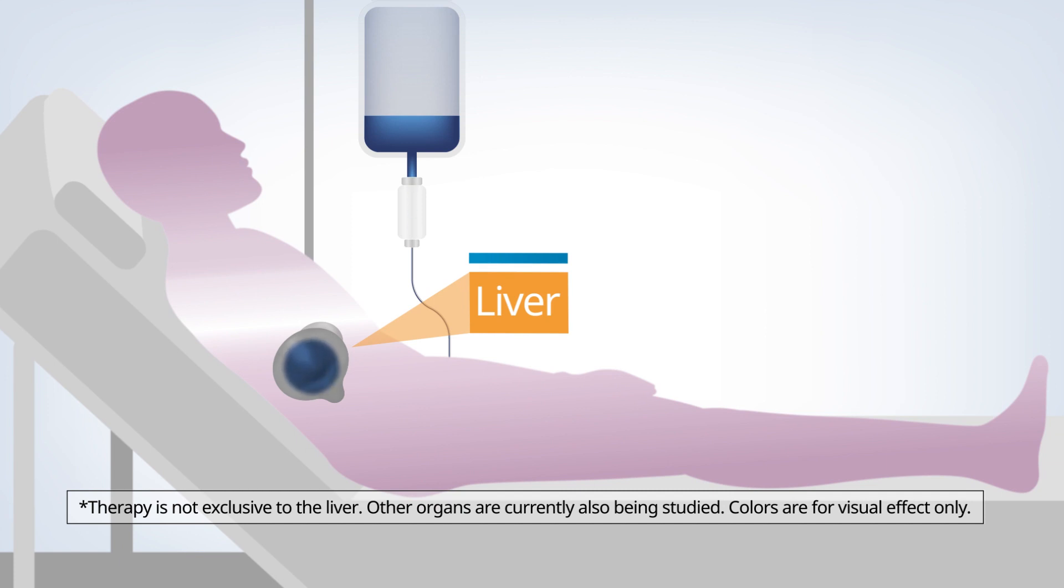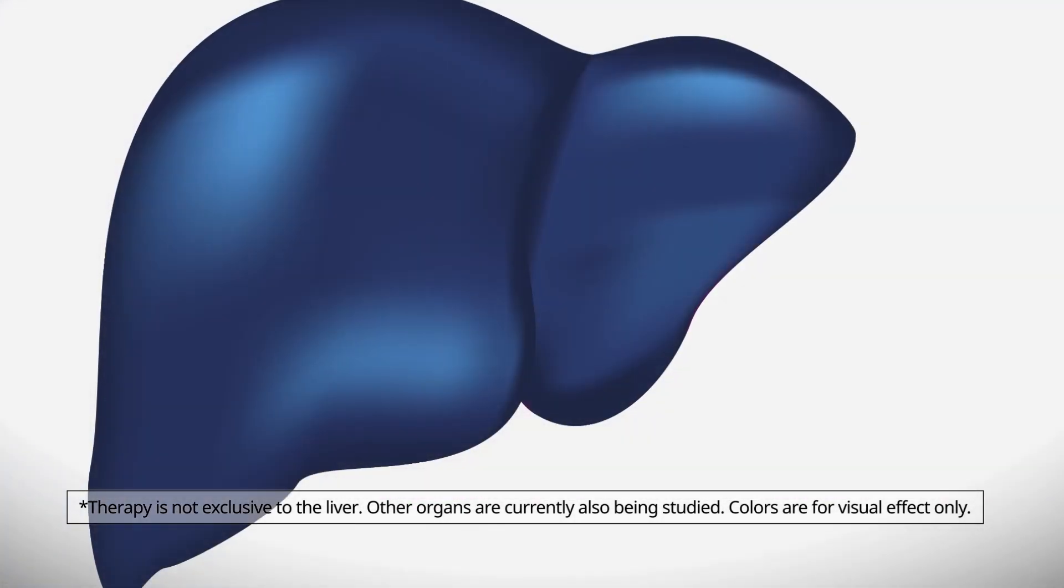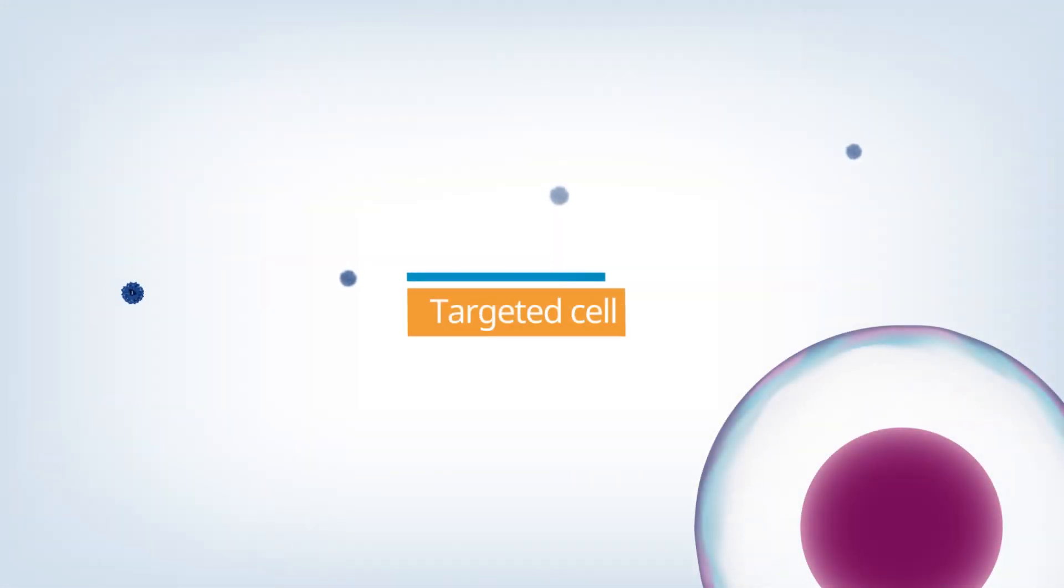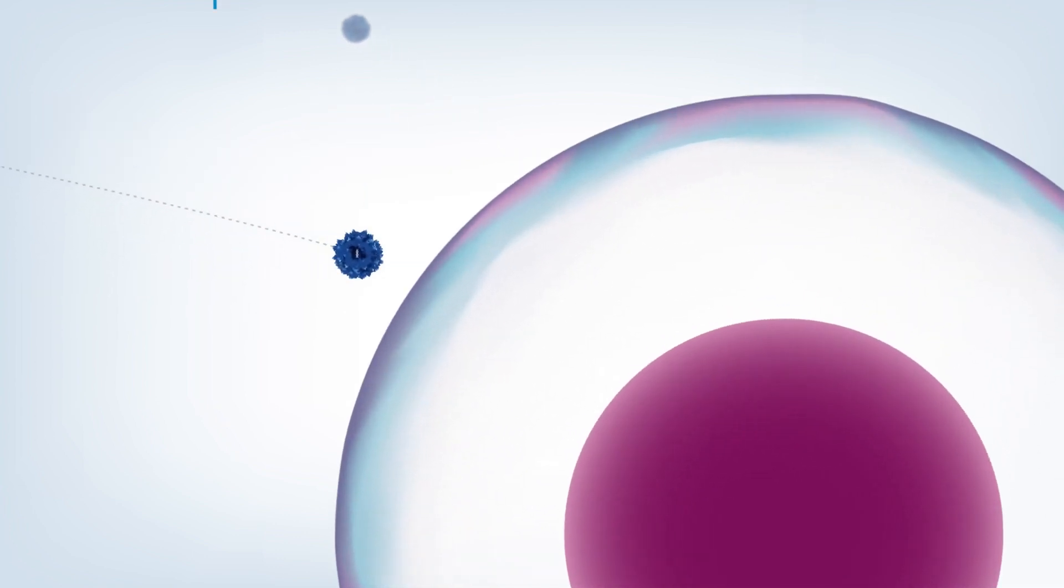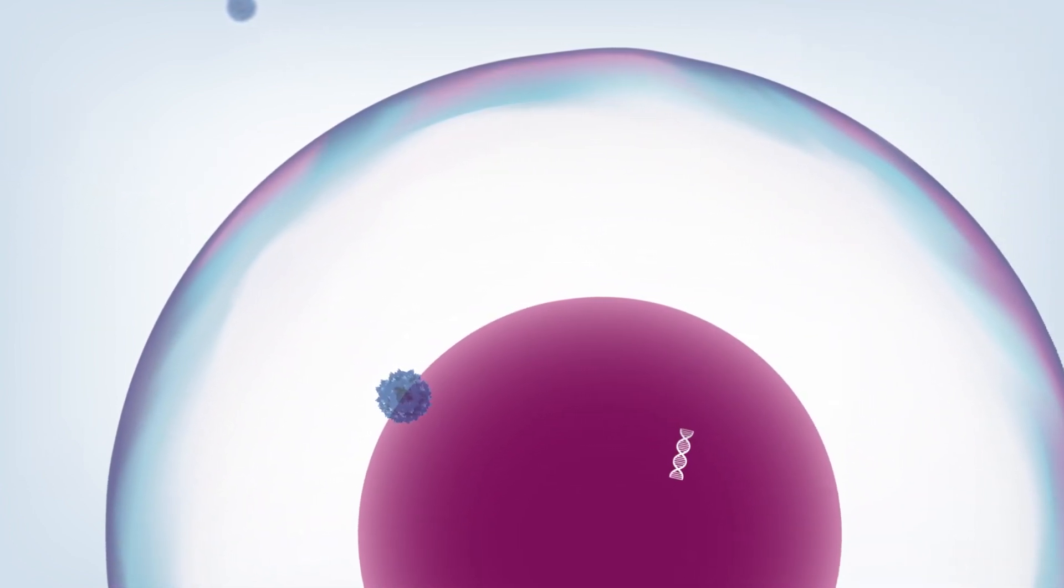Gene therapy is designed to target specific organs, such as the liver. Other organs are also being studied as potential gene therapy targets. When the vector reaches its target cell, the functioning gene is transferred and used as a blueprint to create the missing or non-functioning protein.